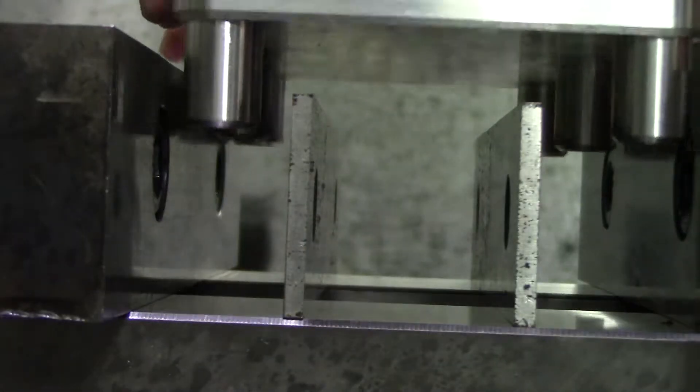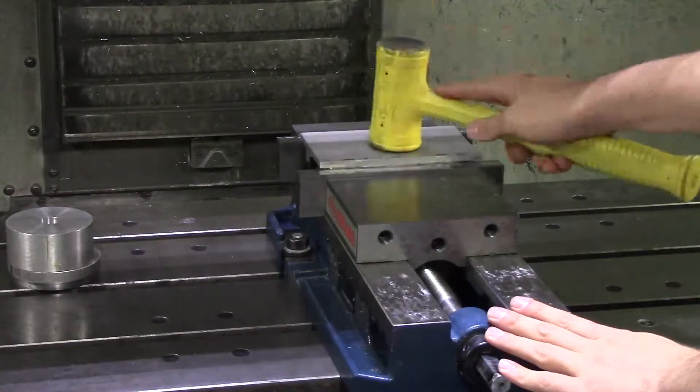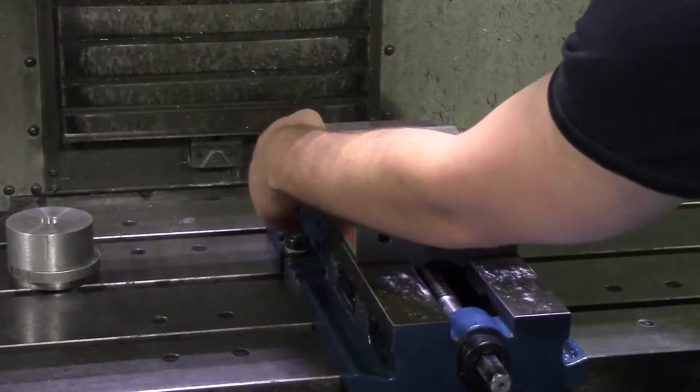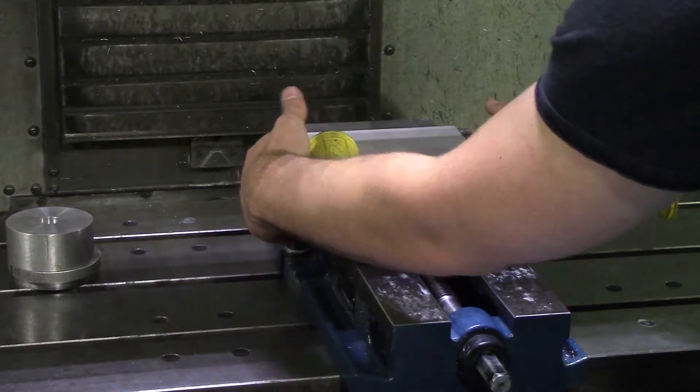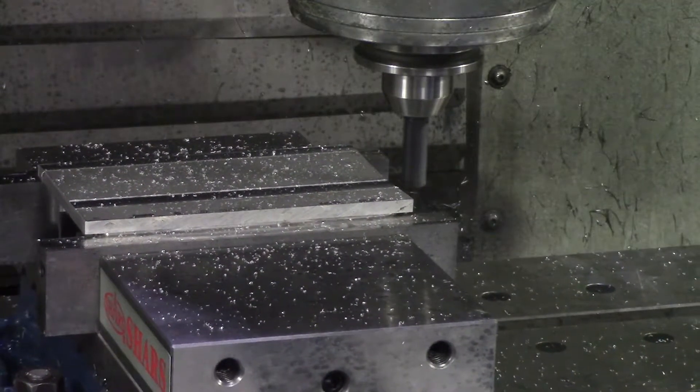I'm going to set the part down, and as you can tell, that's why I always double check the parallels with my hands. Just tap on it, and then you want to check the parallels on all four corners to make sure it's sitting flat. Now I'm going to take a skin pass so I can touch off all my tools.